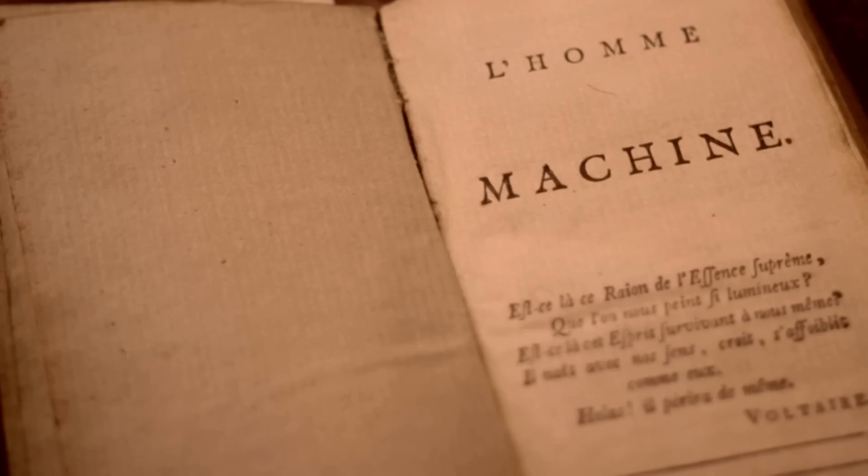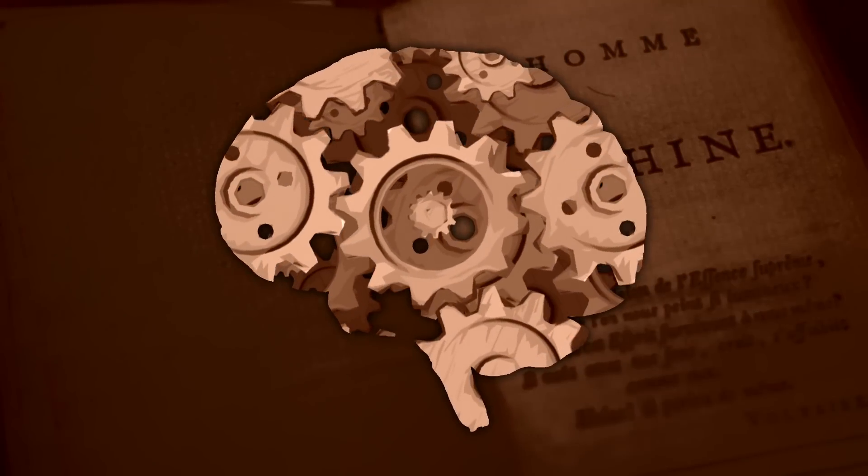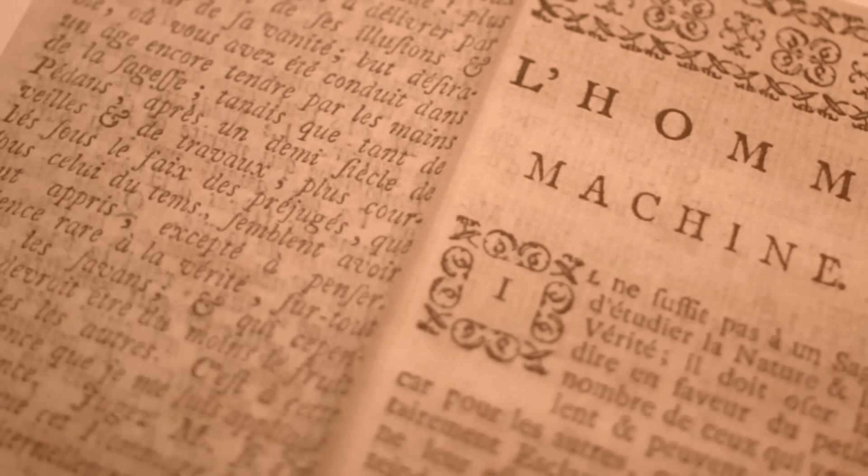Physician and philosopher Julien Lametrie wrote a book called Man the Machine, which claimed that the human body, including the brain, is just a self-winding machine, a collection of springs.